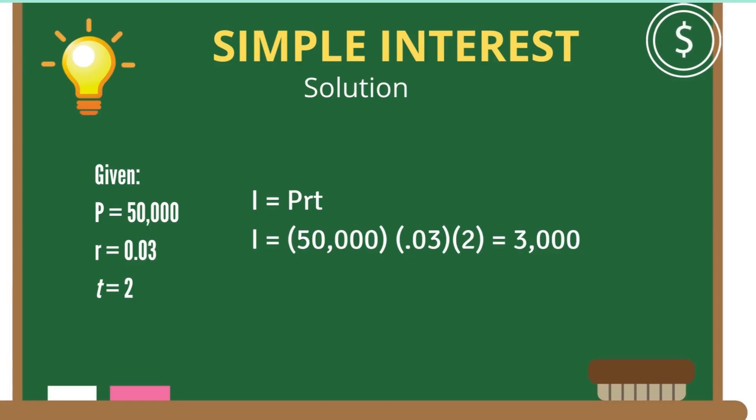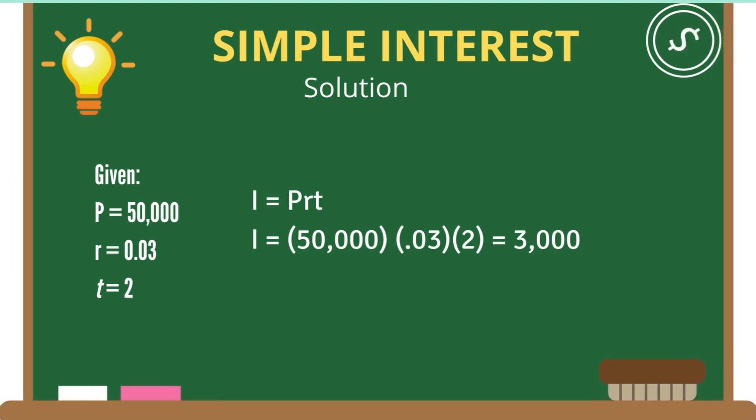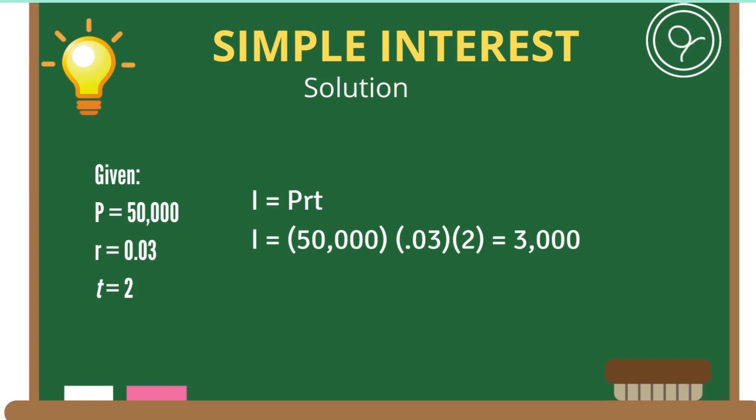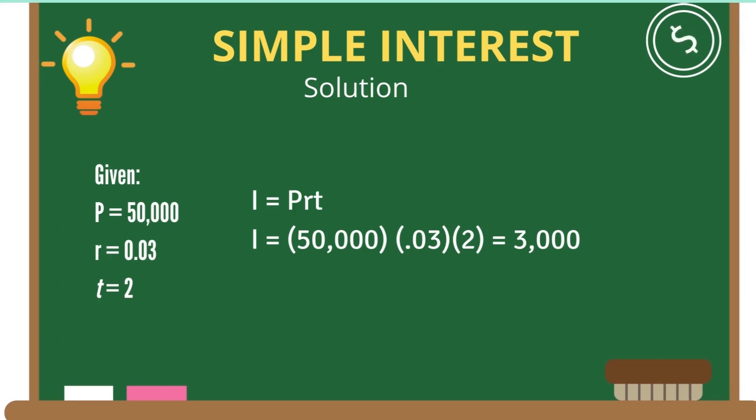Let's solve the problem. First you have to get the given: the principal is 50,000, the rate is 0.03, and the time is two years. We have to solve it using the formula I = Prt, which is 50,000 × 0.03 × 2, and it equals 3,000. From this we conclude that the investment earned is 3,000 pesos.